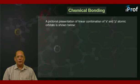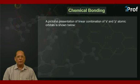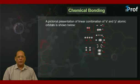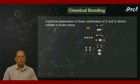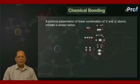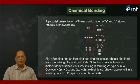A pictorial presentation of linear combination of S and P atomic orbitals is shown below. Look into this figure. We find that 1s orbital combines with 1s orbital to form two new molecular orbitals. One is of lower energy, known as sigma 1s. Another is of higher energy, that is sigma asterisk 1s.